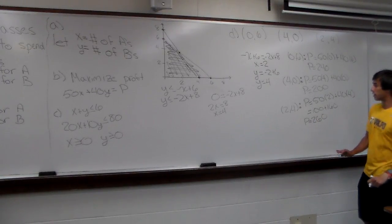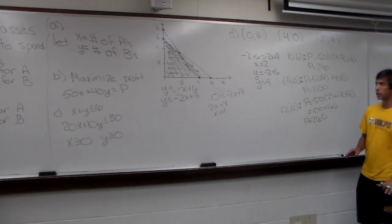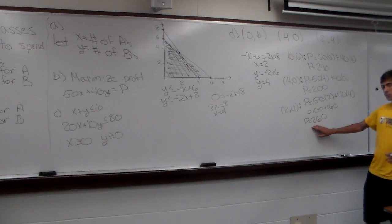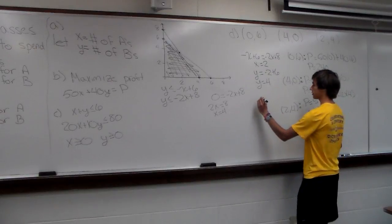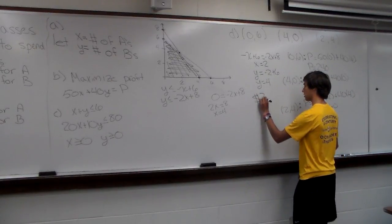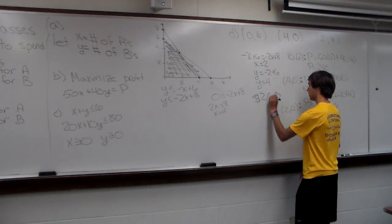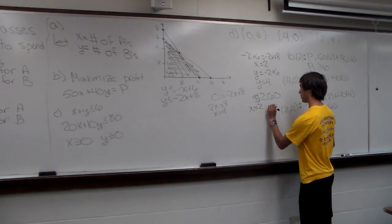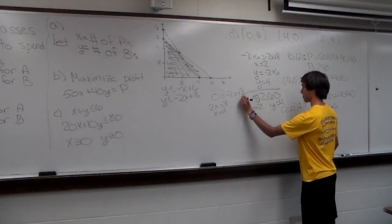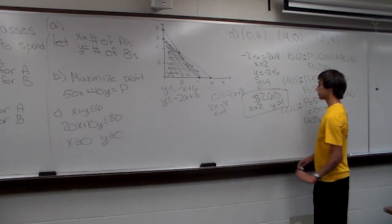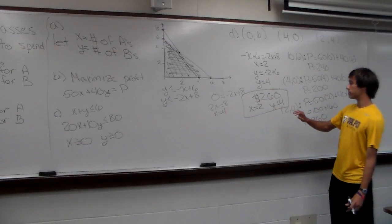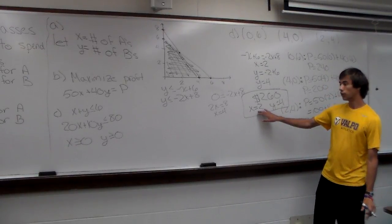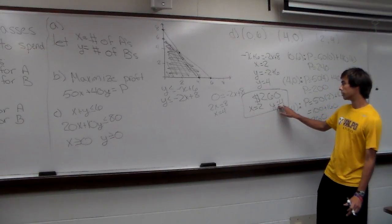The maximum amount of money Henry can make is $260. That occurs when X = 2 and Y = 4 — meaning he earns the most money when he gets two A's and four B's.